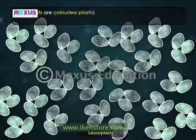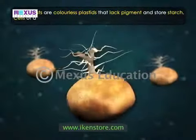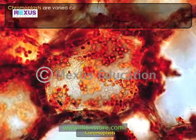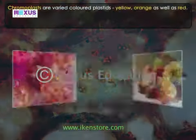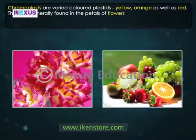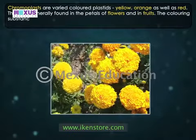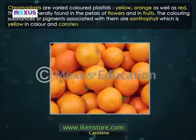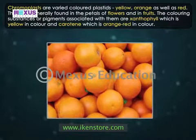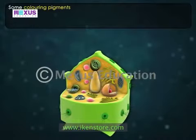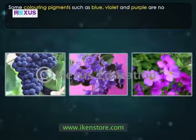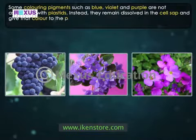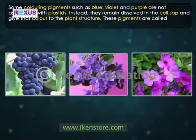Leucoplasts are colorless plastids that lack pigment and store starch. Cells of a potato have lots of leucoplasts in them. Chromoplasts are varied-colored plastids — yellow, orange, as well as red — generally found in the petals of flowers and in fruits. The pigments associated with them are xanthophyll, which is yellow in color, and carotene, which is orange-red in color. Some coloring pigments such as blue, violet, and purple are not associated with plastids; instead, they remain dissolved in the cell sap and give that color to the plant's structure. These pigments are called anthocyanins.